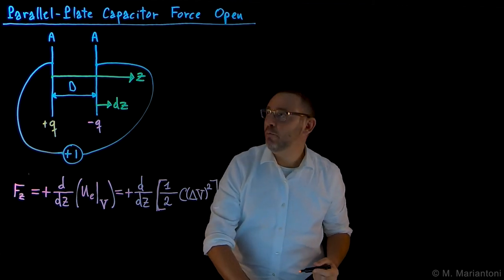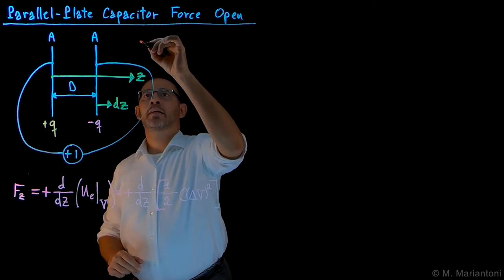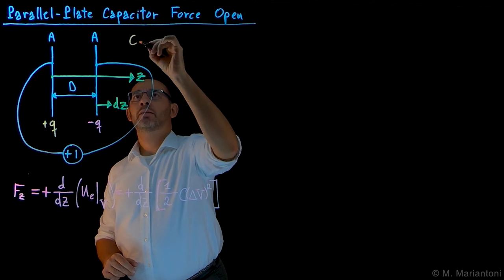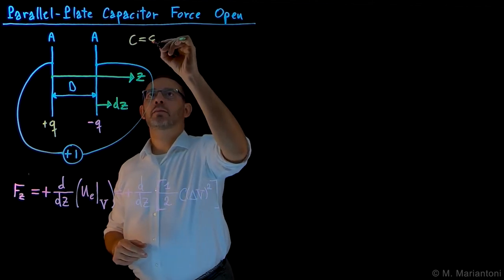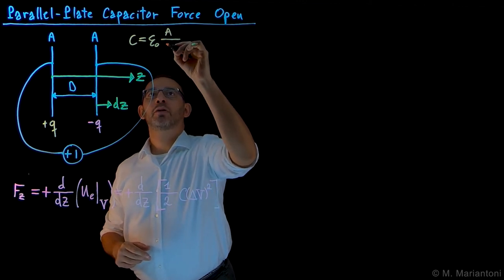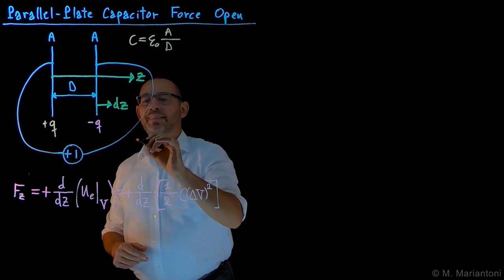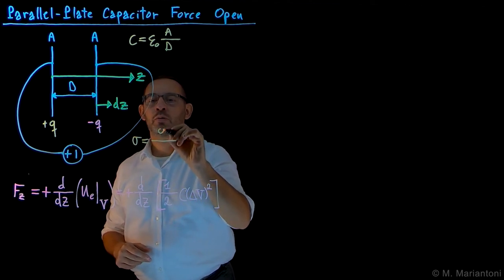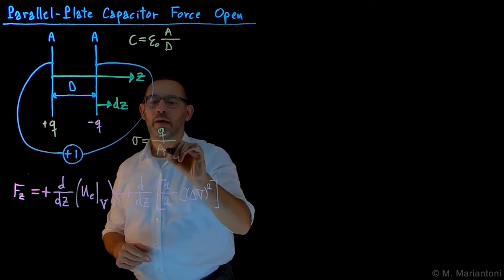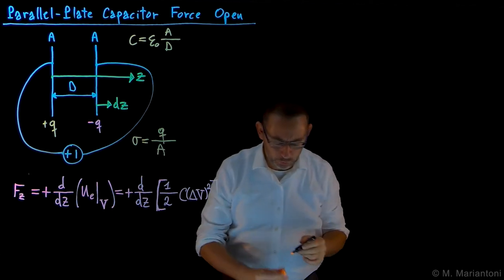Let us remind ourselves what is the capacitance associated with this object. When the distance between the plates is D, it is epsilon naught A divided by capital D. What is sigma? The total charge Q on the positive plate divided by A. At least this is plus sigma.